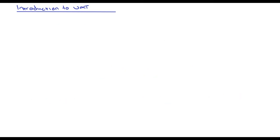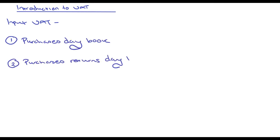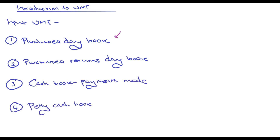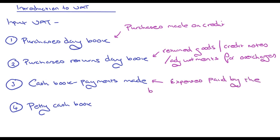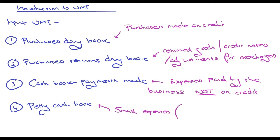Next we have input VAT, which relates to purchases and purchase returns. You're going to have four ledger books: a purchase day book, which records all purchases made on credit; a purchases returns day book for returned goods, credit notes, and adjustments for overcharges; and a cash book payments made for expenses paid by the business that are not on credit — if they were on credit, they'd be recorded in the purchases day book.